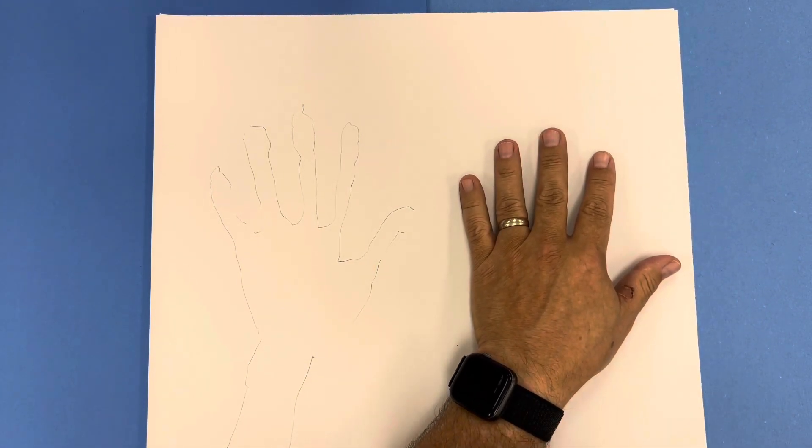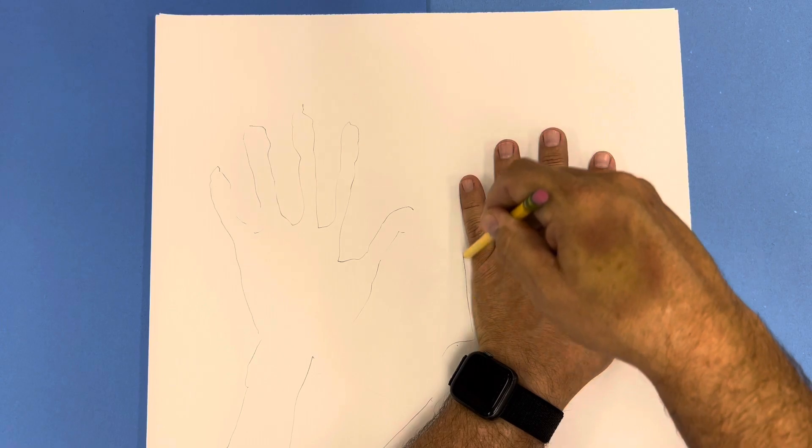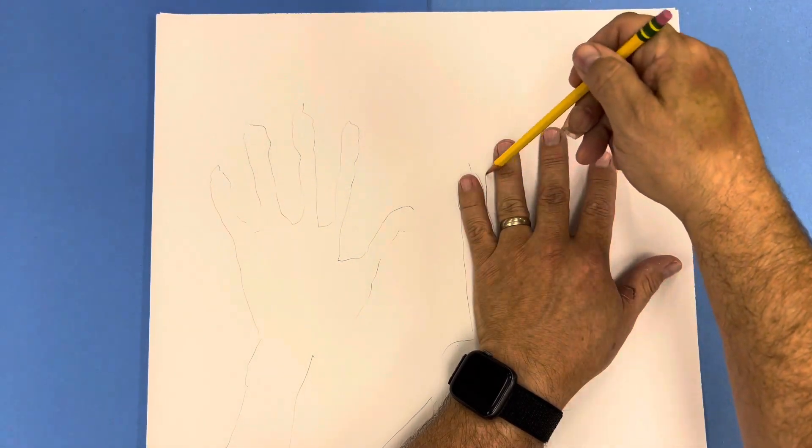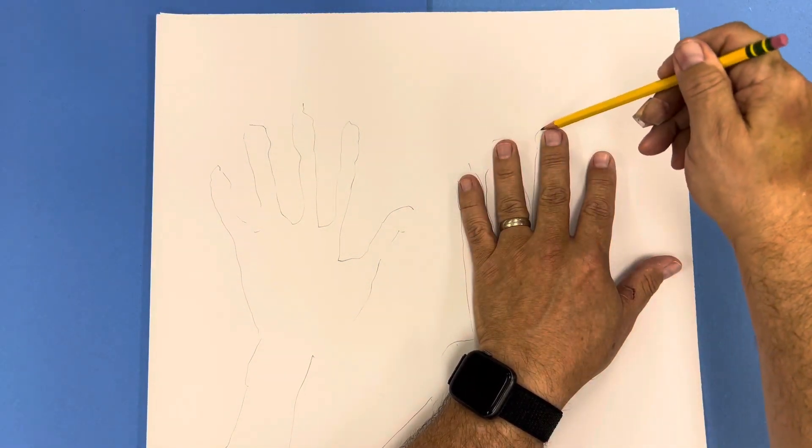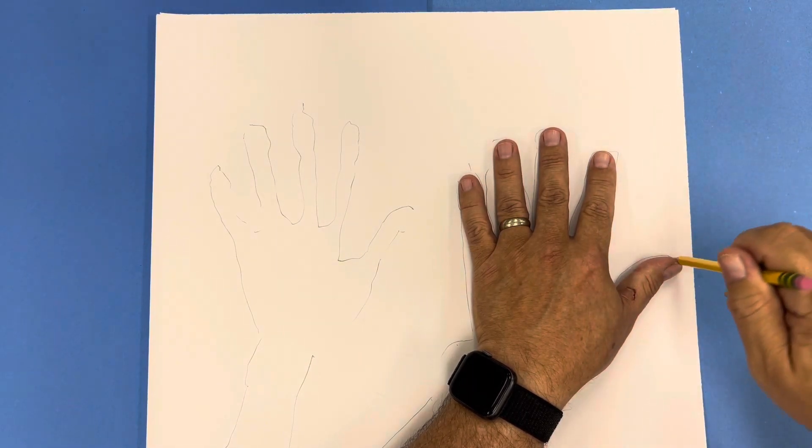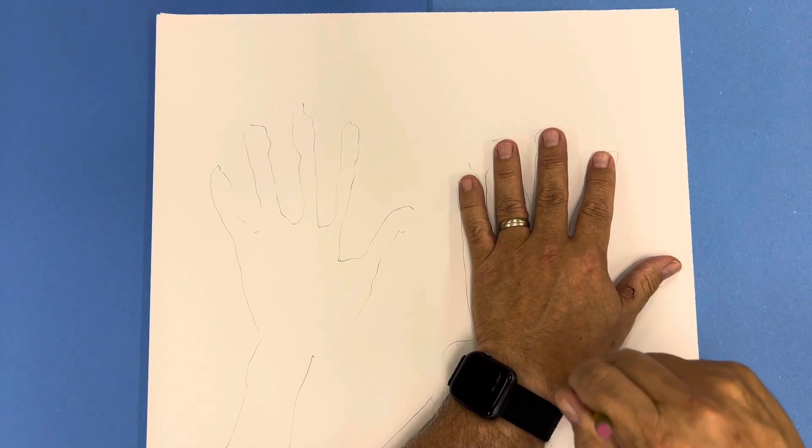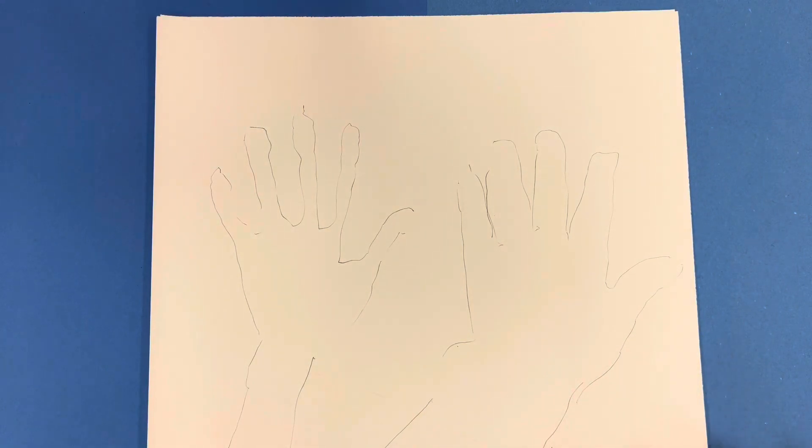The opposite can be true too where you're going too wide with it and you're going around and not paying much attention to the lines and you end up with something that looks like the Hulk. We want to have a tracing that's going to be relatively representative of the actual size of your hand.